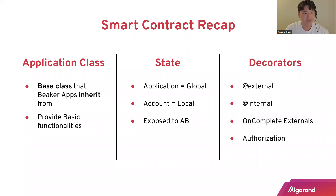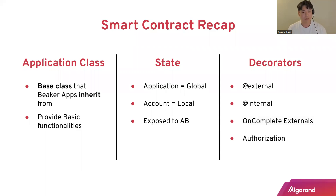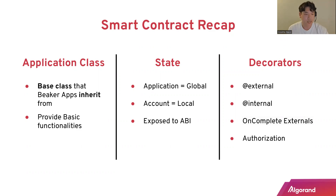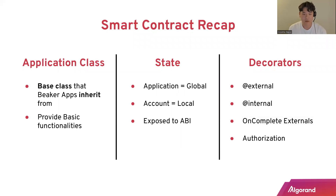Quick recap of the smart contract part of Beaker: the Application class is the base class all Beaker applications inherit from, providing basic functionality that abstracts away the complexity. Application state equals global state; account state equals local state in Beaker — both exposed to the ABI in an organized way. The decorators @external, @internal, and on-complete externals all support authorization.